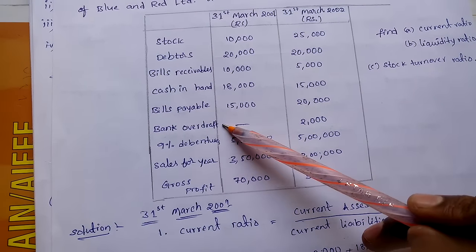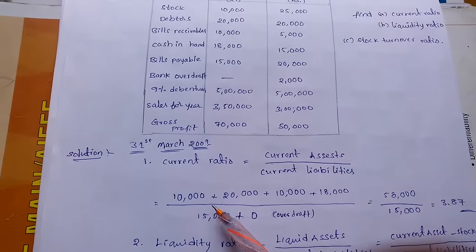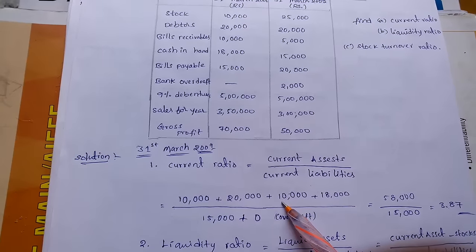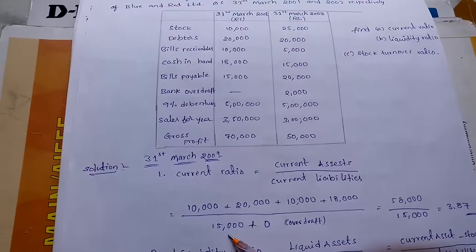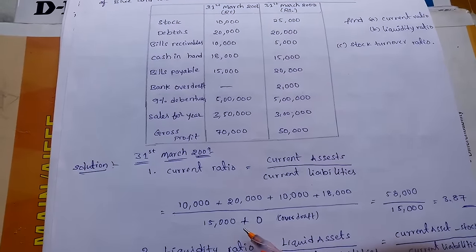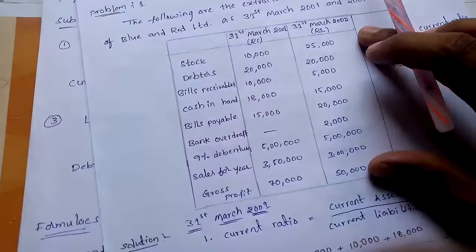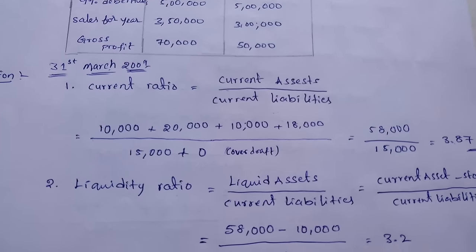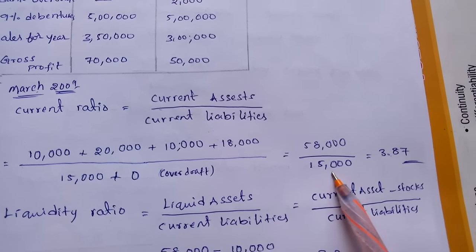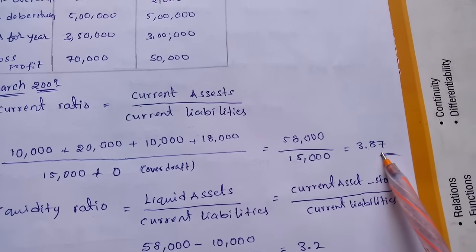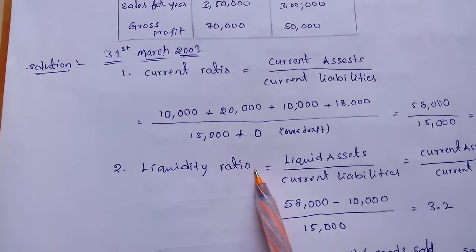The current liabilities are bills payable and bank overdraft. Current assets equals stocks plus debtors plus bills receivables plus cash in hand. Current liabilities are bills payable, that is 15,000, plus bank overdraft, which is zero. Adding these gives 58,000 divided by 15,000, and simplifying this we get 3.87. This is the current ratio.